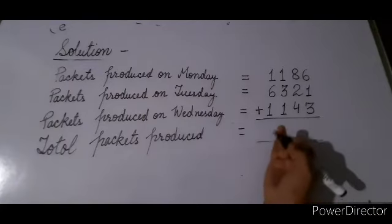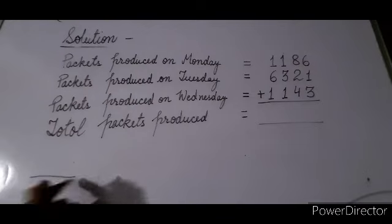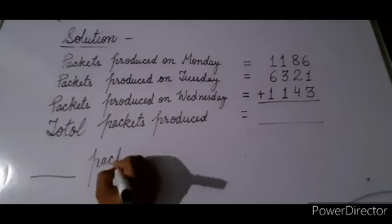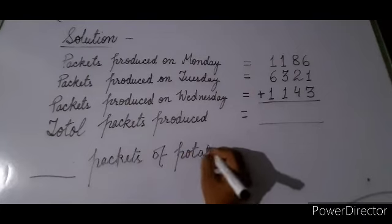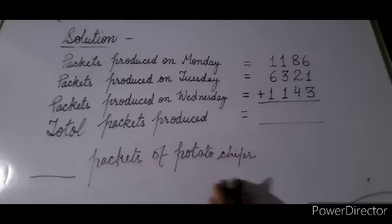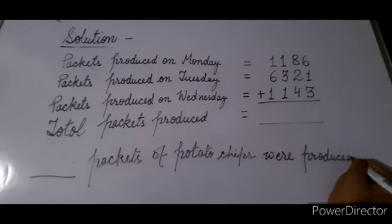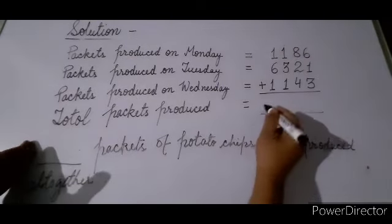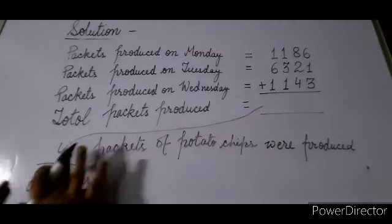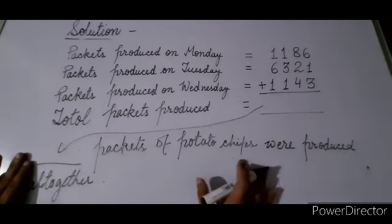Add all three numbers and tell me the answer. In the answer line, write whatever comes from the addition: 'This many packets of potato chips were produced all together.' Write the full sentence for the answer — don't just draw an arrow. The answer statement should be: '[Total] packets of potato chips were produced all together.'